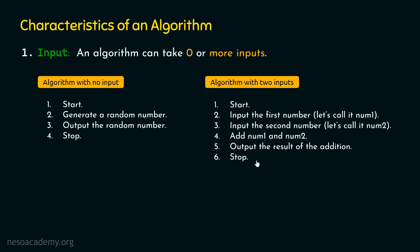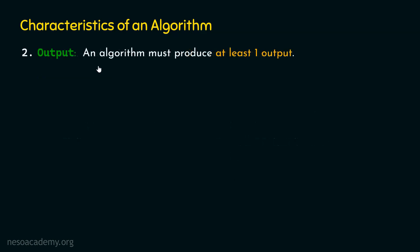With these two examples, it is clear that an algorithm can take zero inputs or more than one inputs. Now let's move to characteristic number two, which is output. An algorithm must produce at least one output. It can accept zero inputs, but it is not possible for an algorithm to generate no output. An algorithm must generate at least one output — it can produce more than one, but at least one is mandatory. Otherwise, the algorithm is considered invalid.